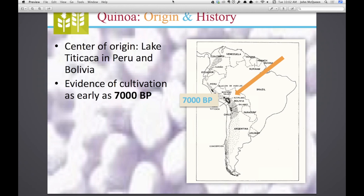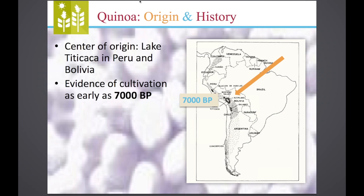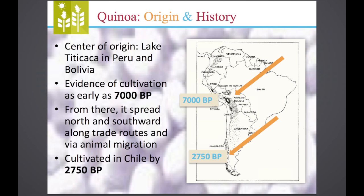Quinoa was domesticated near Lake Titicaca in Peru and Bolivia, about 7,000 years ago, as shown by the arrow. From there, it spread north and south along primarily the Inca Trail, which at its heyday was about 21 feet wide and stretched from Santiago to Quito — all the way up into Colombia and down to about central Chile, arriving there about 2,700 years ago.